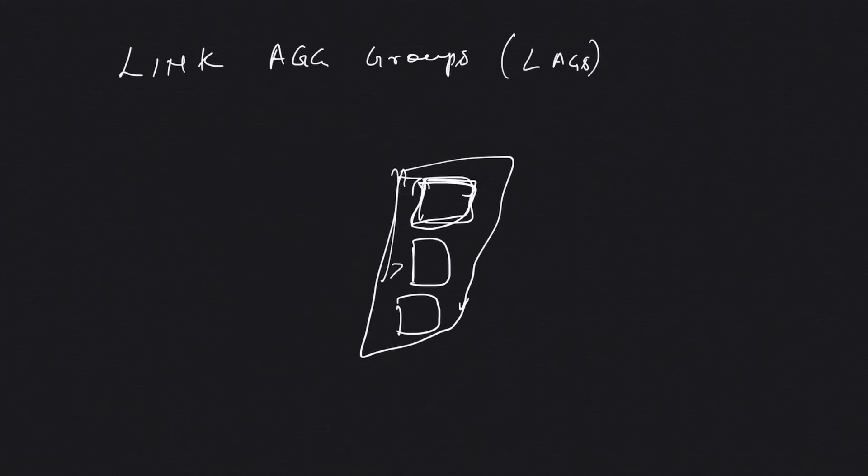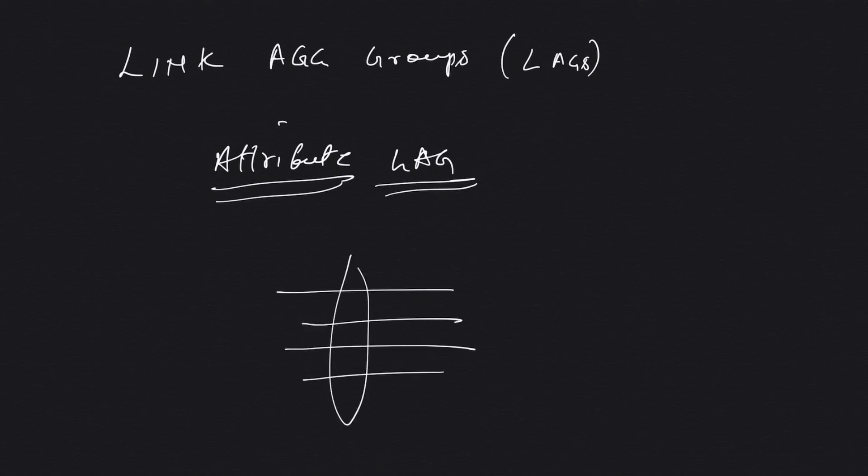There's an attribute when you create a LAG. This attribute sets the minimum number of connections in the LAG that must be operational for the LAG to itself be operational. Suppose you have four connections in a LAG and you set the minimum to be two.